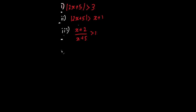First question: the absolute value of 2x plus 5 has to be greater than 3. Now, I think most of you will jump into this question and take the 3 and the minus 3, but I want to go slowly and explain the intuition behind it.